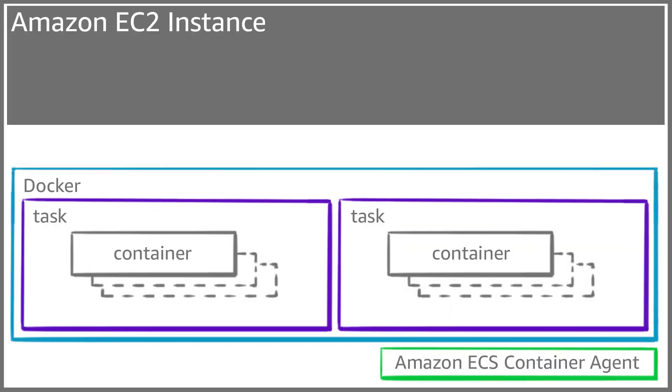ECS runs containers on a managed cluster of Amazon EC2 virtual machines, or as we call them, instances. When you create an ECS cluster in a specific region, such as US West 2, the instances within it can span multiple AWS availability zones, such as US West 2A and US West 2B. If we take a look at one of the EC2 instances running in our cluster, we can see that it is running ECS tasks, which are groupings of running Docker containers, the ECS container agent, which helps our tasks communicate with the ECS control plane, and the Docker daemon.